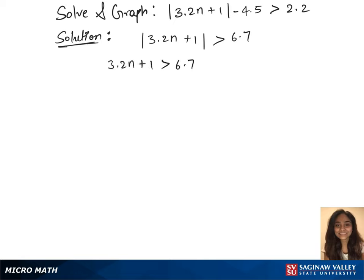We'll first solve the first inequality, which is 3.2n plus 1 greater than 6.7, or 3.2n plus 1 less than minus 6.7.